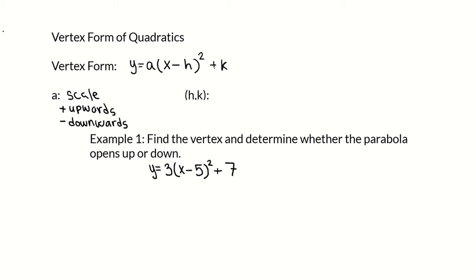When the quadratic is written in this form, h comma k — where h is the value subtracted from x in the parentheses, and k is the value added or subtracted after the parentheses — h comma k is the vertex point.